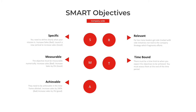Company-wide — and software engineering departments are generally more disciplined on this — but especially at the department level, you need to have SMART objectives. If you don't know this: they need to be Specific, Measurable, Achievable, Relevant, and Time-bound. Let's take sales as an example away from the tech world.